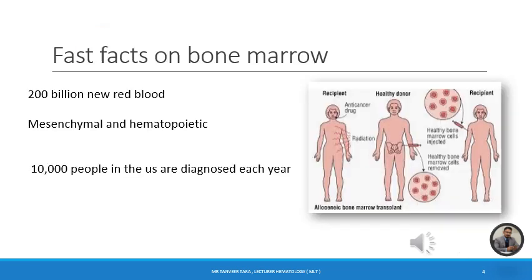Here we have some facts about bone marrow. Bone marrow produces 200 billion new red blood cells every day, along with white blood cells and platelets. Bone marrow contains mesenchymal and hematopoietic stem cells which are further subdivided into different lineages: red blood cells (erythropoiesis), leukopoiesis, and thrombopoiesis. Around one lakh people in the United States are diagnosed each year with diseases that require bone marrow transplantation.